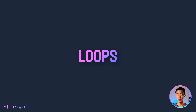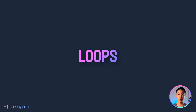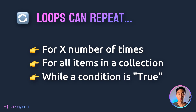Welcome to part six of this 12-part Python tutorial series for beginners. Congratulations if you made it this far because you're halfway through. In this chapter, we're going to learn about loops in Python. Loops are a way of repeating the execution of our code, and there are several reasons for why we might want to do this, as well as several different ways we can do it.